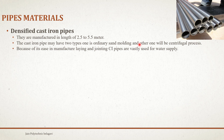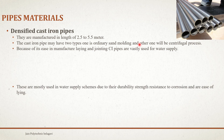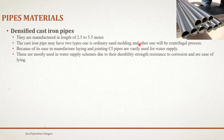Cast iron pipes are less prone to corrosion with respect to water — they are somewhat resistant to hard water and chemically aggressive water, which is why CI pipes are preferred in such conditions. These are mostly used in water supply schemes due to their durability, strength, and resistance to corrosion. They are easy to lay, usually installed by manpower rather than machinery.